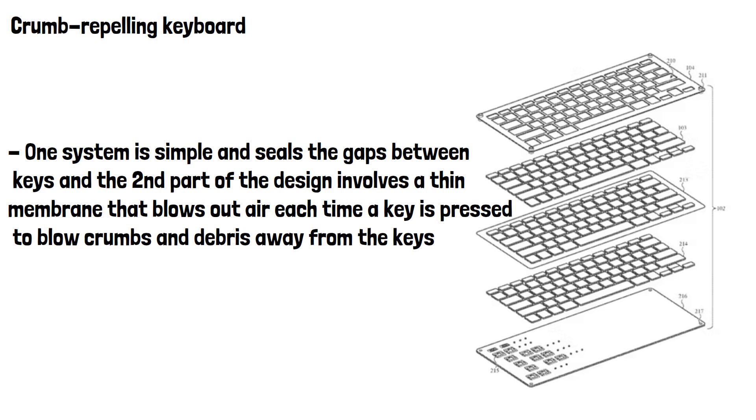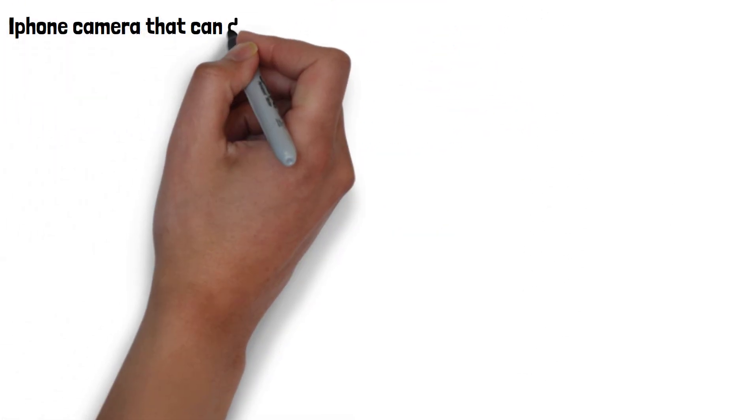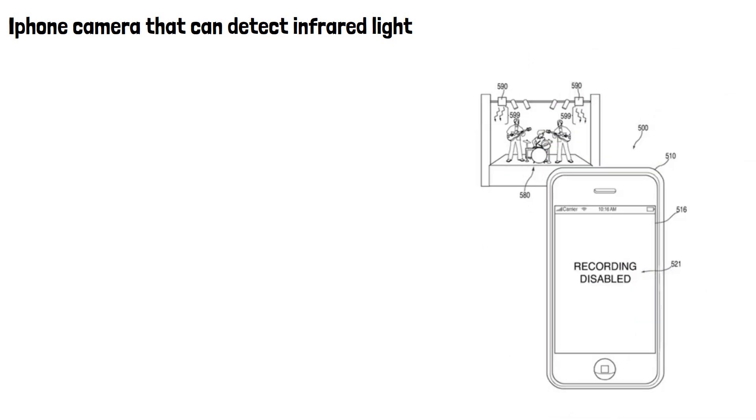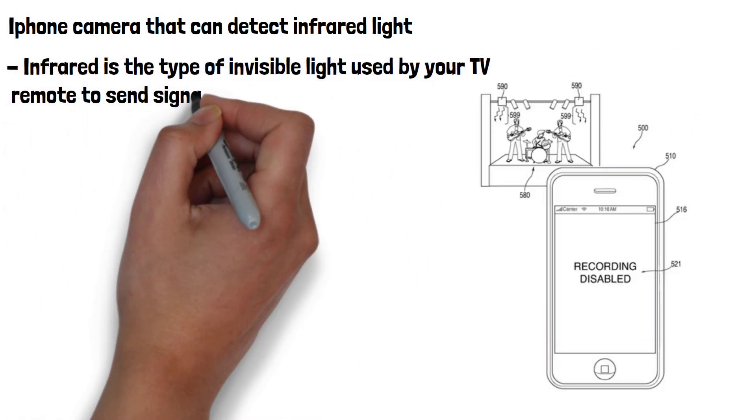The final patent we'll look at today is more of a feature than a device. This patent is for a design that allows the iPhone camera to detect infrared light. Infrared is the type of invisible light used by your TV remote to send signals to your TV.